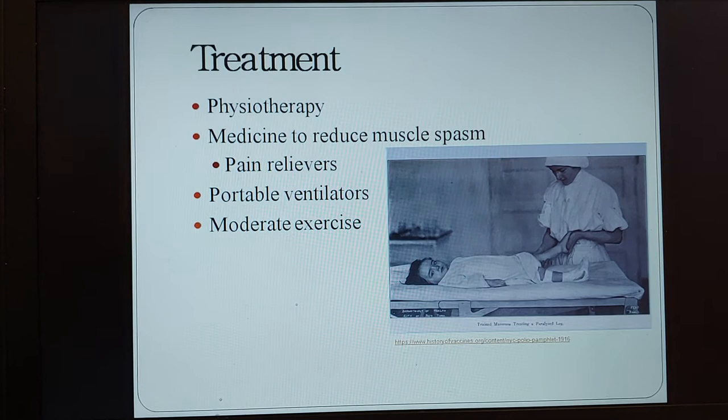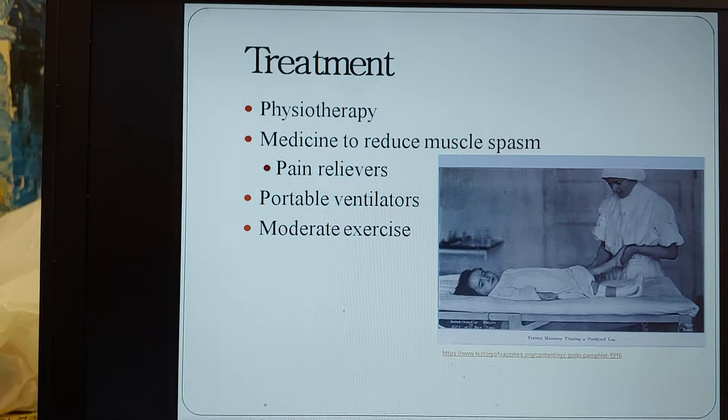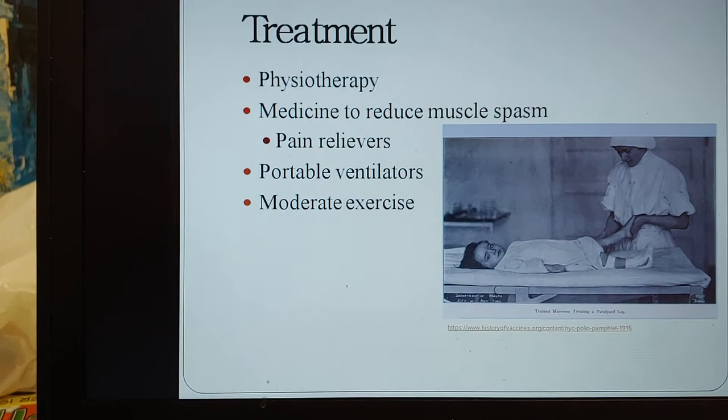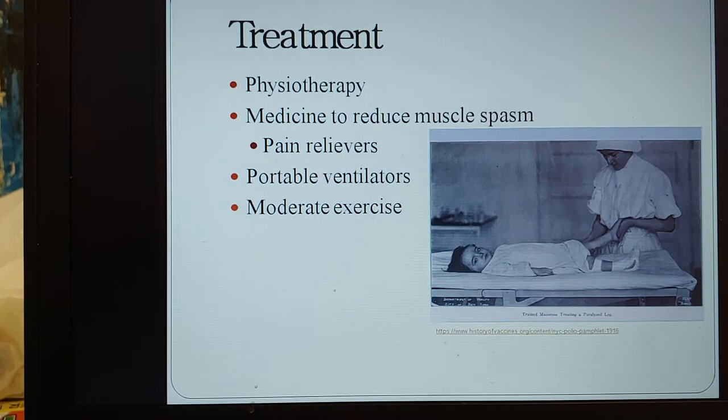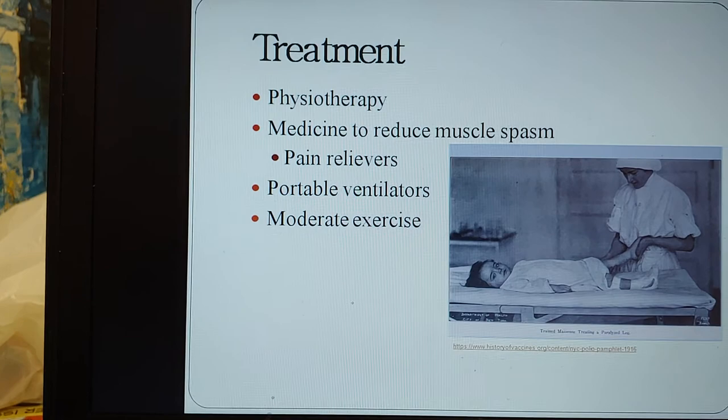As of 2015, there have been no reported cases of polio originating in the United States. Cases from 1990 to 2015 involved people bringing it in from outside the country, but it was confined and did not spread, due to herd immunity and our vaccination programs. However, polio is still prevalent in many developing countries. More developed countries, including those in Europe, don't have this problem, but it is seen much more in Asia and Africa.